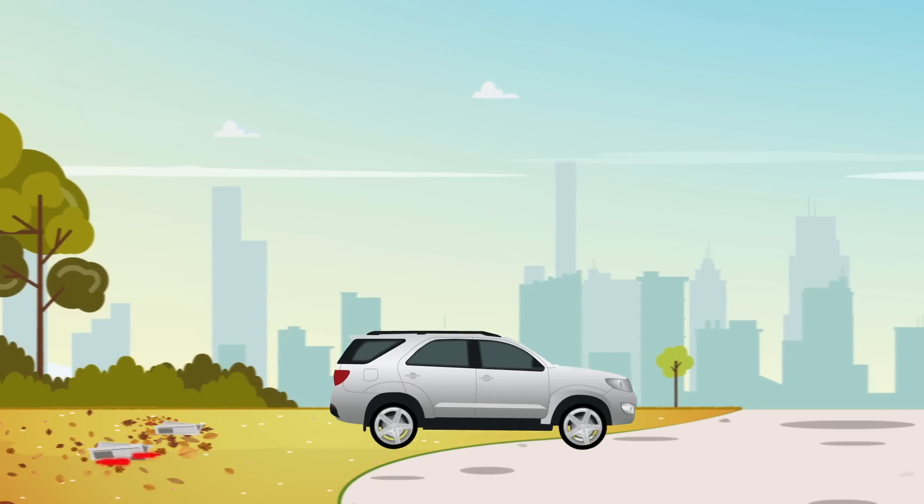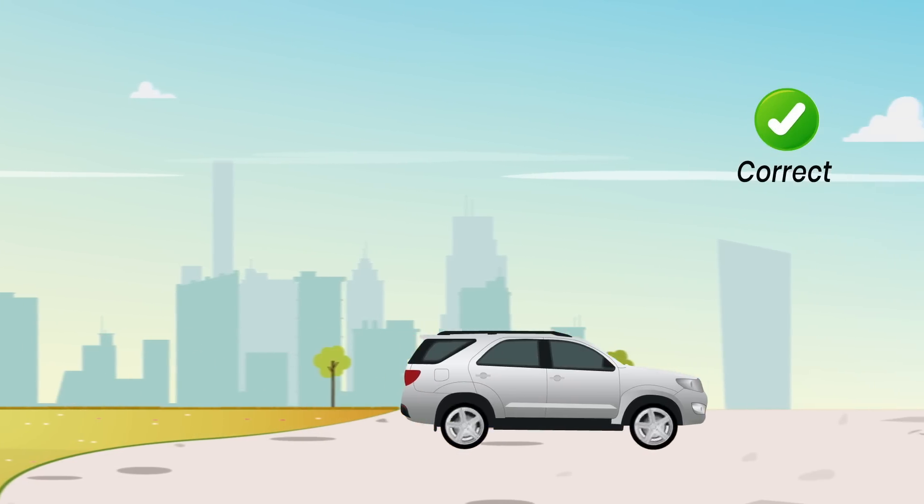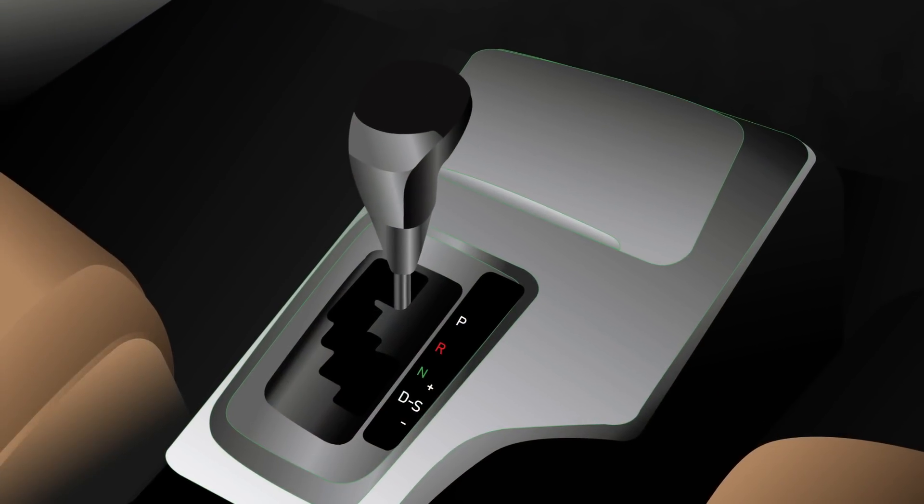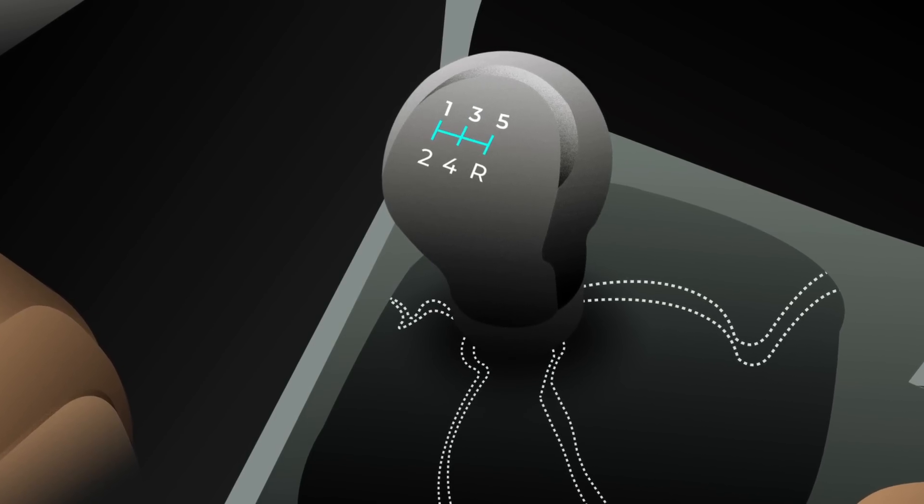Park your car in an open space where there are no flammable objects near the exhaust system. Do not stop the engine. Shift the gear lever to P for vehicles with automatic transmission or N for vehicles with manual transmission, and firmly set the parking brake.